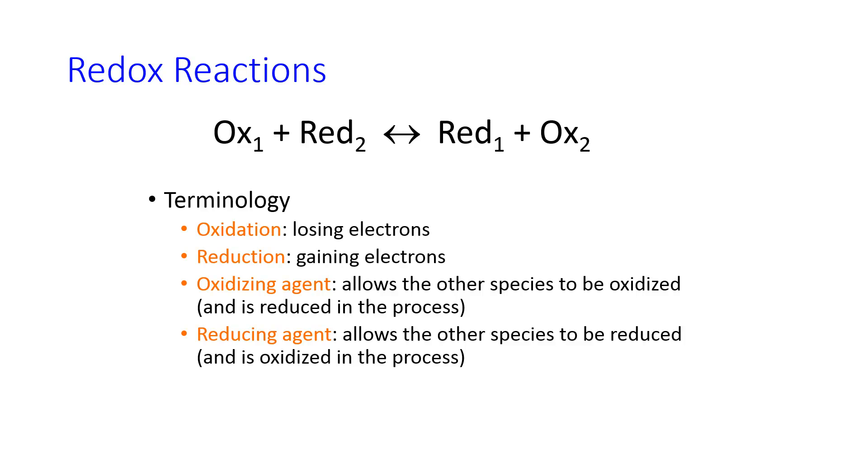When something is oxidized, it loses electrons, and when something is reduced, it gains electrons. We have the somewhat confusing terminology that the oxidizing agent is the thing that gets reduced. It allows the other species to be oxidized, and vice versa for the reducing agent. A much better way to think about this is to count oxidation numbers, which you should have a background in from general chemistry. If the oxidation number goes up, that species is oxidized. If the oxidation number goes down, that species is reduced.